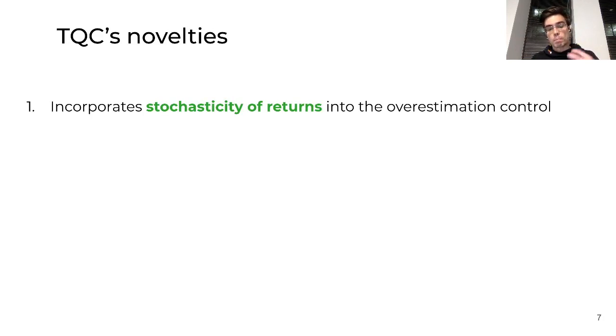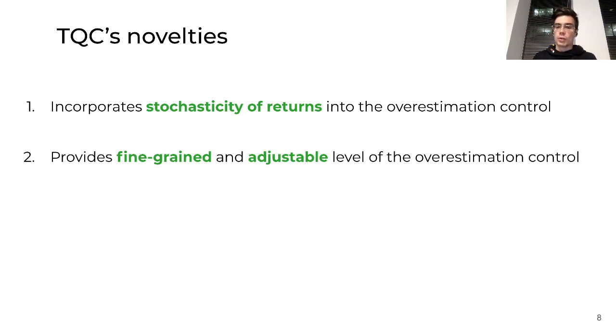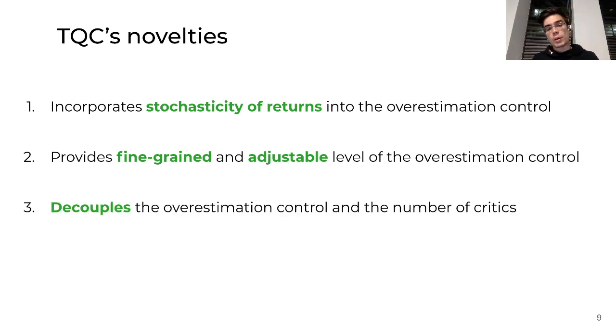This structure, these elements, lead to several new and interesting properties of our method. The first one is that we incorporate stochasticity of returns into the process of overestimation control. It is important because this exact stochasticity of returns is the root of the overestimation bias. Our method is the first which uses this root to control the overestimation. The second property is that our method provides a fine-grained level of control. By varying hyperparameters, we can choose the exact level of overestimation control that we need. The third property is that we decouple the overestimation control and the process of ensembling. We can independently vary the level of overestimation compensation and the number of critics.